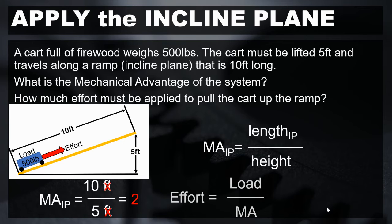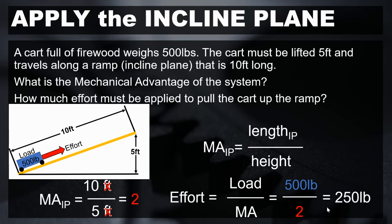We then have to solve for effort. Effort equals the load divided by the mechanical advantage. The load in this problem is 500 pounds. The mechanical advantage, which we just calculated, is 2. Therefore, the effort that we have to apply is 250 pounds to pull this cart up the ramp.